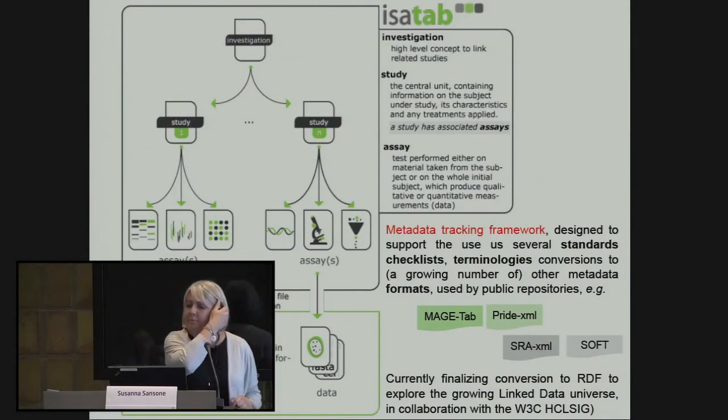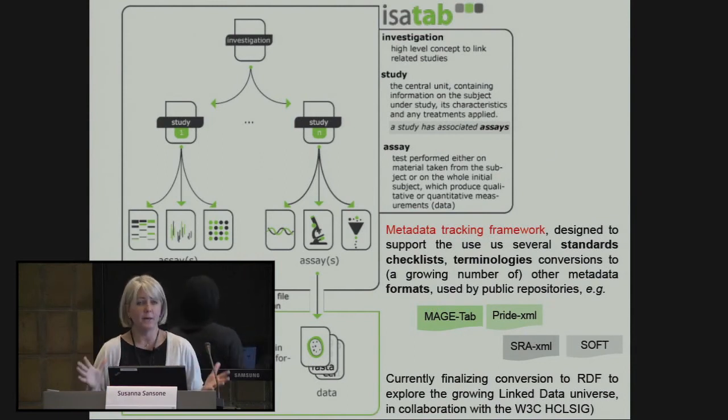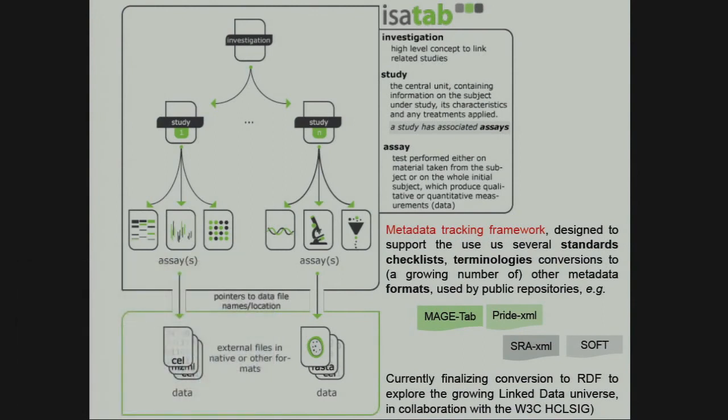ISA stands for Investigation, Study, Assay. It's a way to describe an experiment: the study is the central unit, which has a sample that has been observed, treated, or manipulated. That sample then goes through a certain assay — an analytical measurement — and data is produced. This template is general enough to be customised whether you are describing a microarray experiment or an environmental experiment, depending on the technology used. We convert to formats used by public repositories, because journals in bioscience endorse certain public repositories for data deposition. We also work in the RDF/linked data domain, converting the ISA format into RDF.